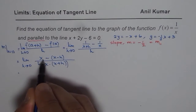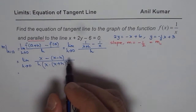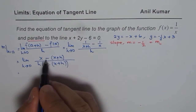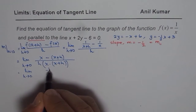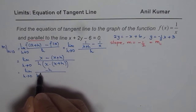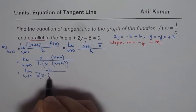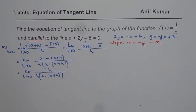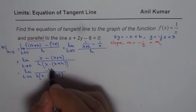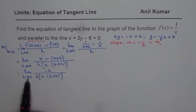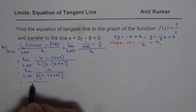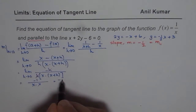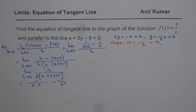Opening the numerator: a - a = 0, and what remains is -h. So we get limit h→0 of [-h] / [h · a(a+h)]. At this stage, we can cancel h. Substituting h = 0, we get -1 / (a · a), which equals -1/a². So the slope of the function at any point a is -1/a².